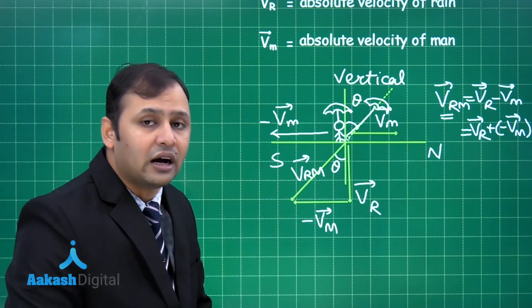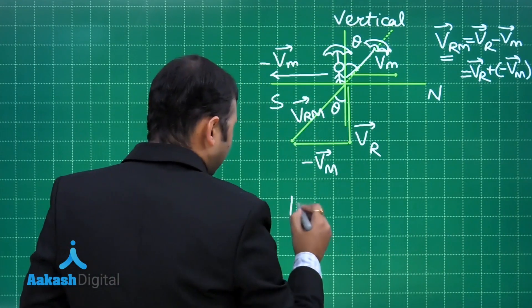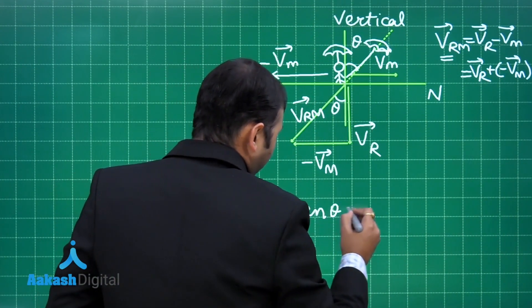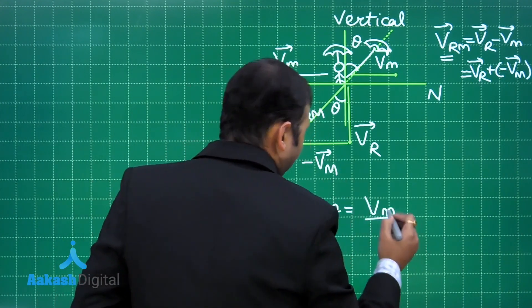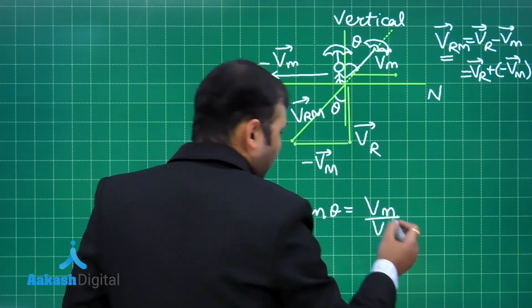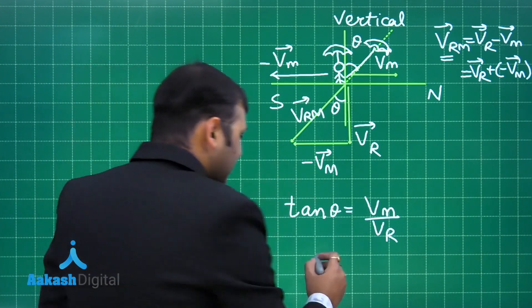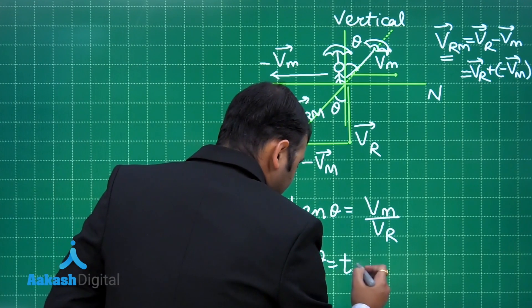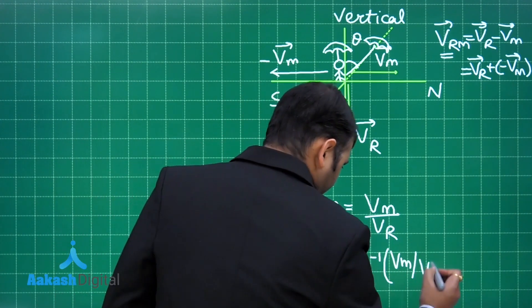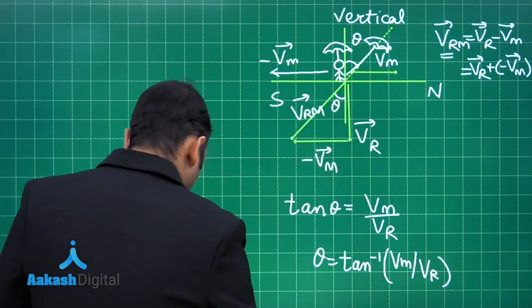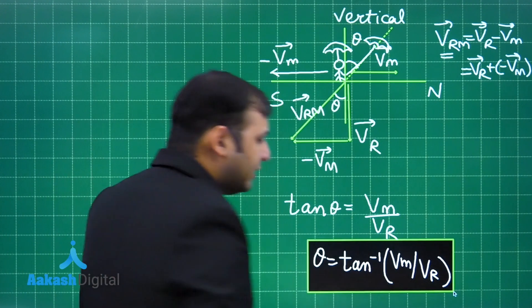To find theta, it is straightforward: tan θ = VM / VR (taking magnitudes only, ignoring direction signs). Therefore, θ = tan⁻¹(VM / VR). This is an important formula you must remember.